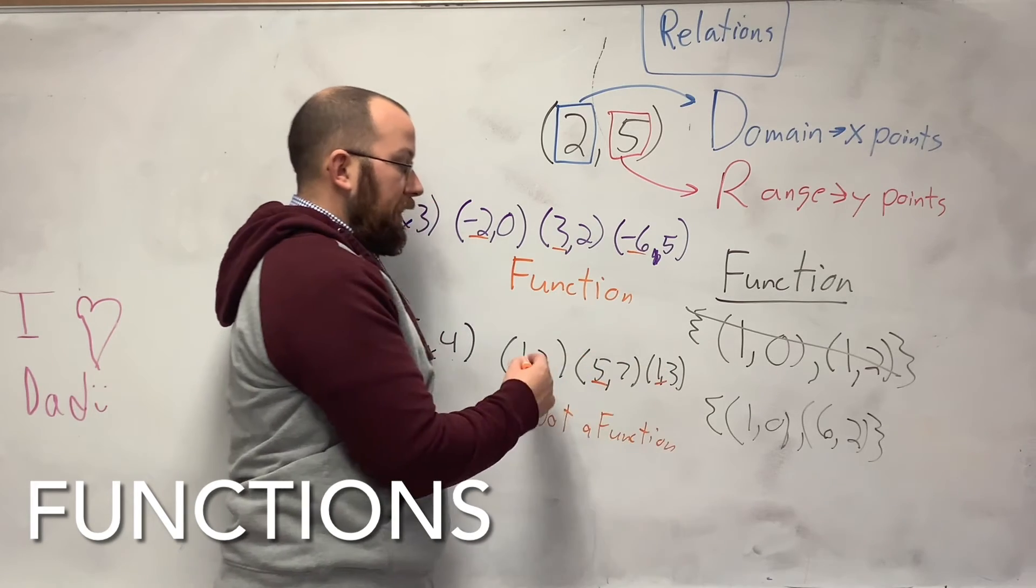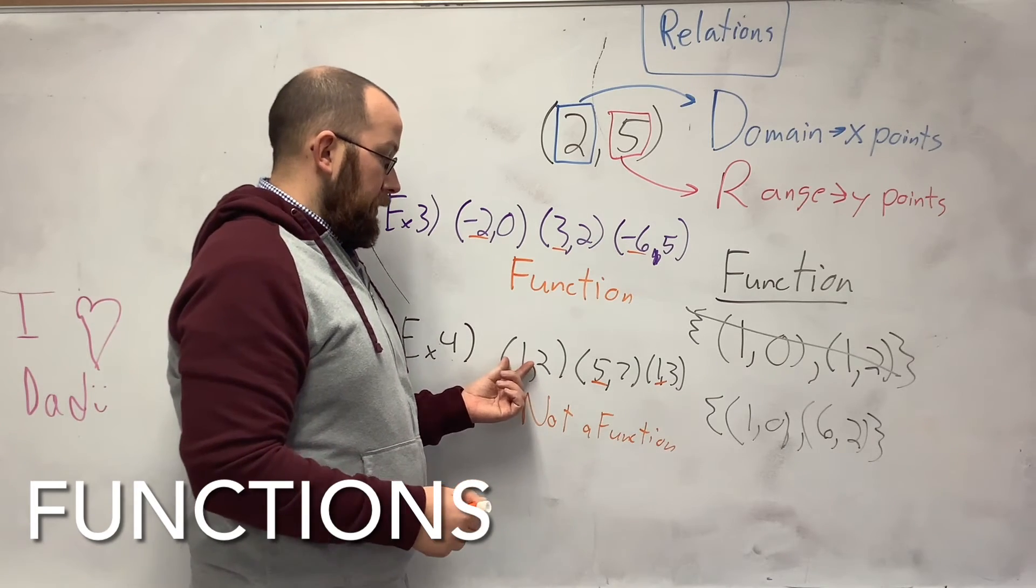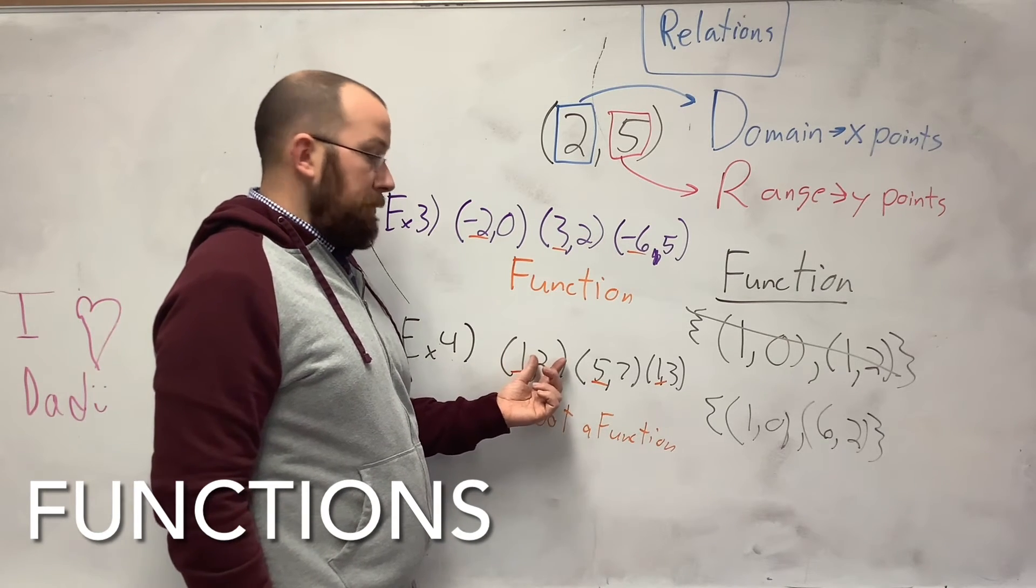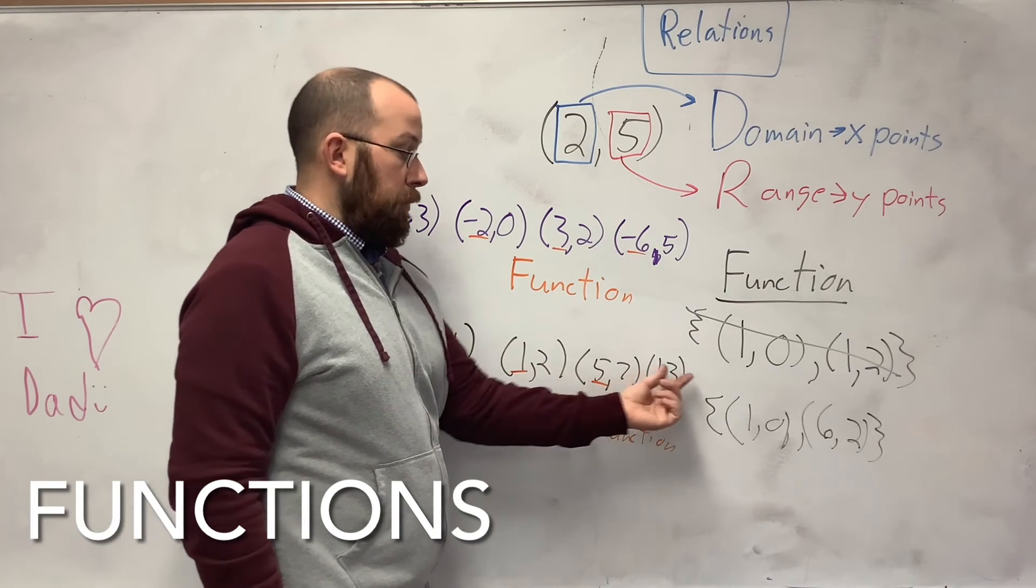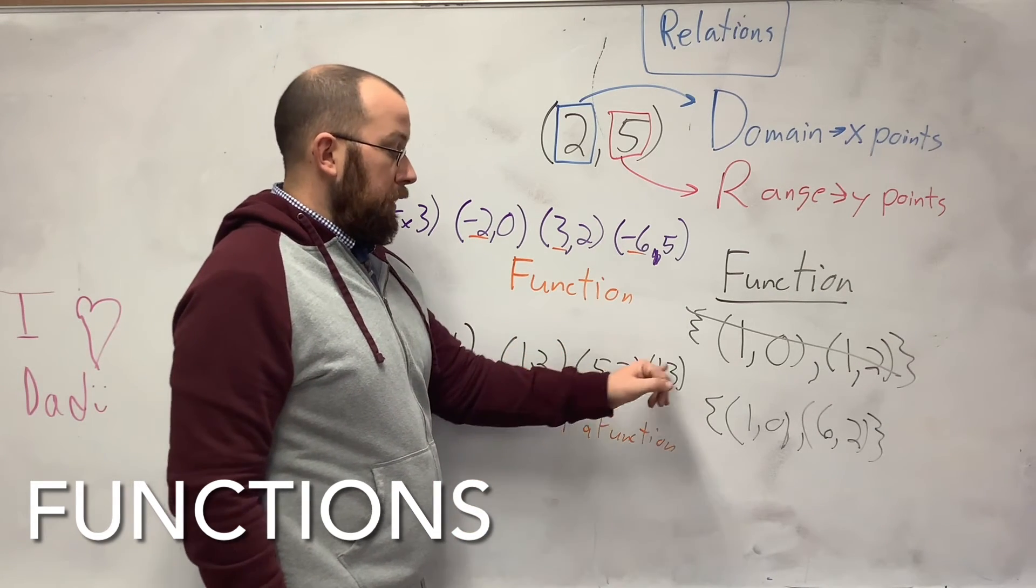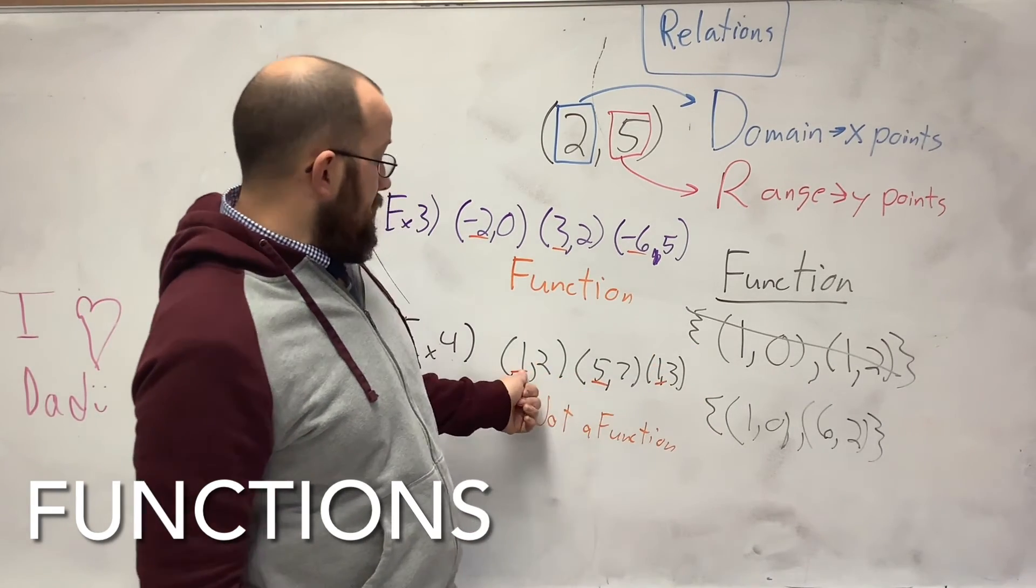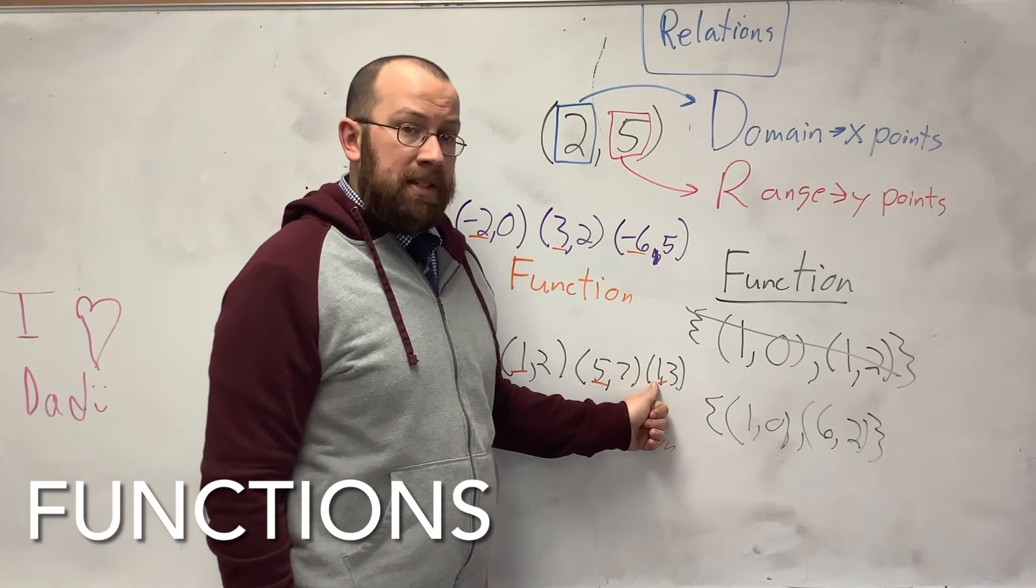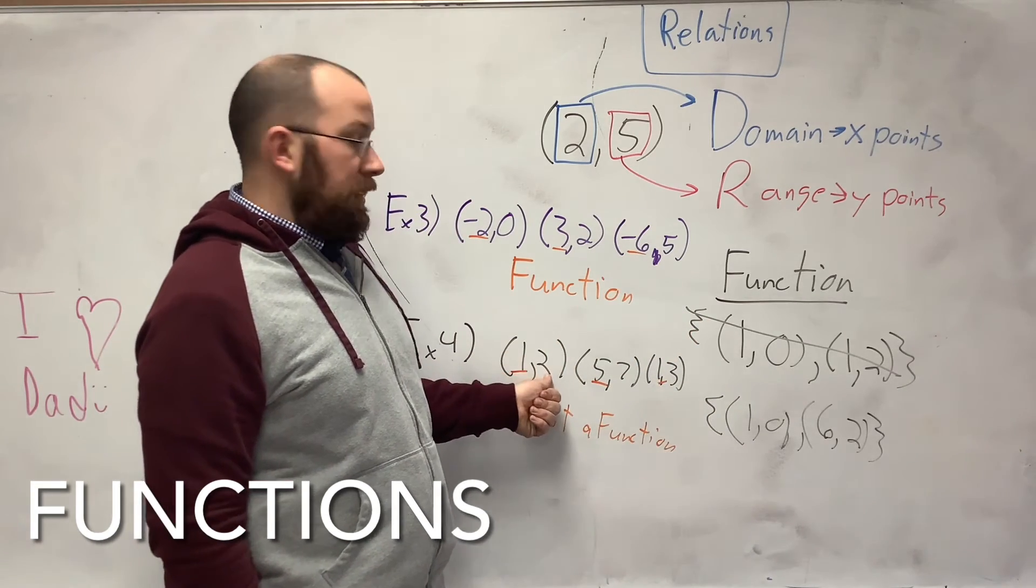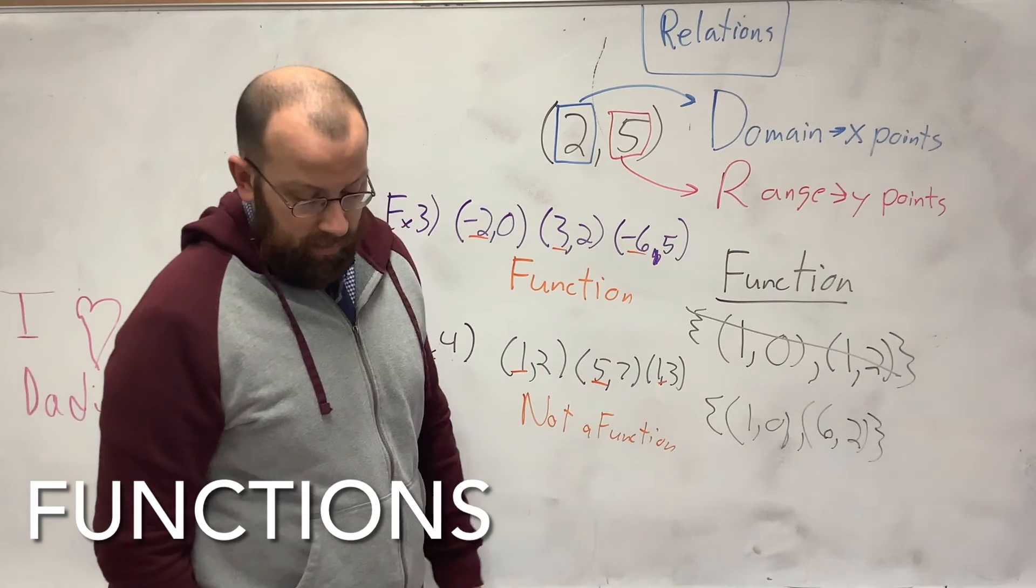So when you find a double of your x value or your domain or your input, if you find a double, so it appears twice in your set, then you need to make sure that it's paired with the same number after that. So if this was (1, 2) and this was (1, 2), this would be a function. But it's not. You have a 1 paired with 2 and a 1 paired with 3. That's like saying I put a pizza in the oven one time and I get pizza out. The next time I put a pizza in the oven, I get orange juice out. It can't happen. When you put a pizza in the oven, even if it gets burned, it's still going to be pizza. You're not going to put it in there the next time and get orange juice out of it.